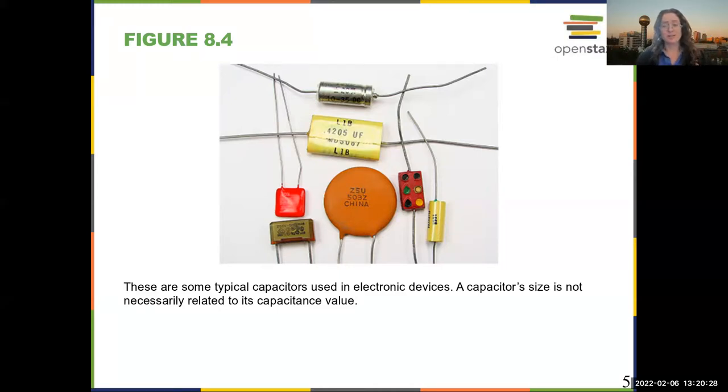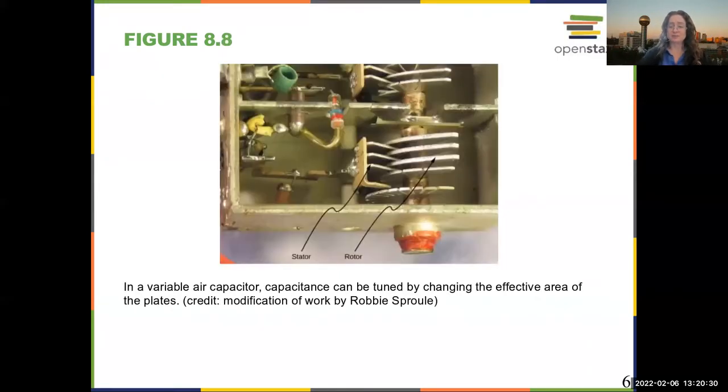There's different ways to make a capacitor. This is a clever device: a variable air capacitor. The material between the plates is air, but you're actually changing the effective area of the plates.